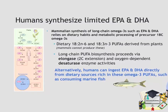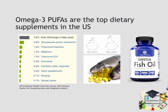Alternatively, humans can ingest EPA and DHA directly from dietary sources rich in these omega-3 PUFAs, such as consuming marine fish — including salmon, tuna, mackerel, sardine, menhaden, anchovy, etc. Given these various health benefits and the human's inability to synthesize these molecules de novo, it's not surprising that omega-3 PUFA supplements are the most popular dietary supplements in the US. A study survey conducted in 2012 by the National Institutes of Health found that approximately 8% of adults consume fish oil or omega-3 fatty acid nutraceutical capsules on a daily basis.